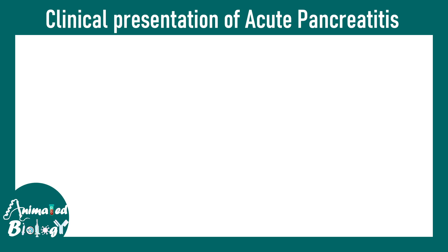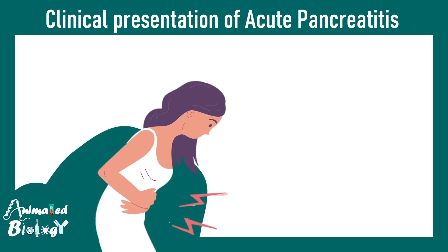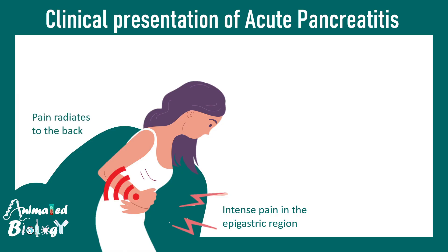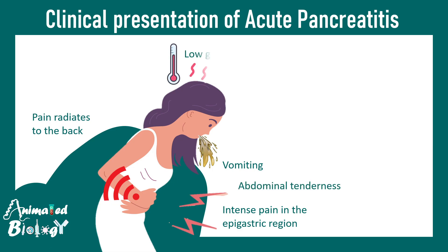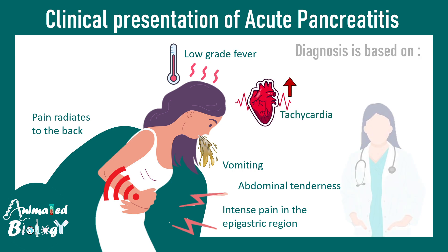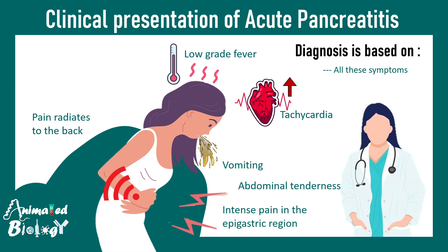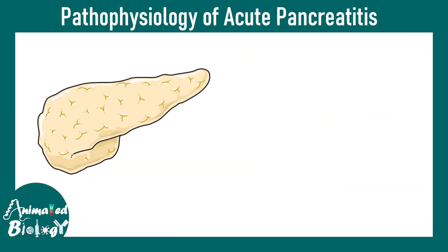Now let's talk about the clinical presentation of acute pancreatitis. There is pain in the epigastric area which can radiate towards the back, vomiting, abdominal tenderness, low-grade fever, and the patient is systemically unwell. There is also tachycardia. Diagnosis is based on these symptoms along with serum amylase level, which is one of the common diagnostic markers.